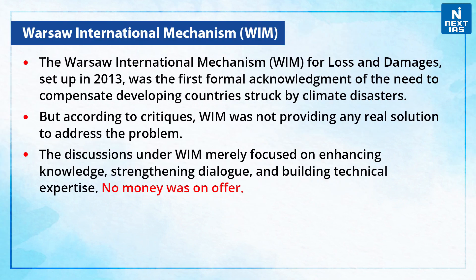Let us talk about the Warsaw International Mechanism. The Warsaw International Mechanism for Loss and Damages, set up in 2013, was the first formal acknowledgement of the need to compensate developing countries struck by climate disasters. But according to critics, WIM was not providing any real solution to address the problem. The discussions under WIM merely focused on enhancing knowledge, strengthening dialogue and building technical expertise — and still no money was on offer.